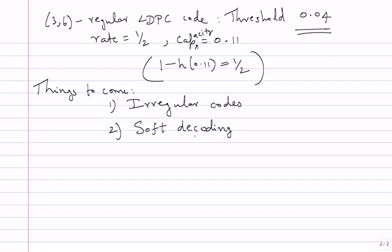Let us complete this picture with the BSC and then move on. I want to generalize the requirement that every column should have a constant weight and every row should have a constant weight. I know that the row weights and column weights are going to control the performance of the decoder — Gallagher A decoding depends on the column weight and row weight, and density evolution is parametrized by those. You will see the way irregular codes are defined will also restrict column weights and row weights.